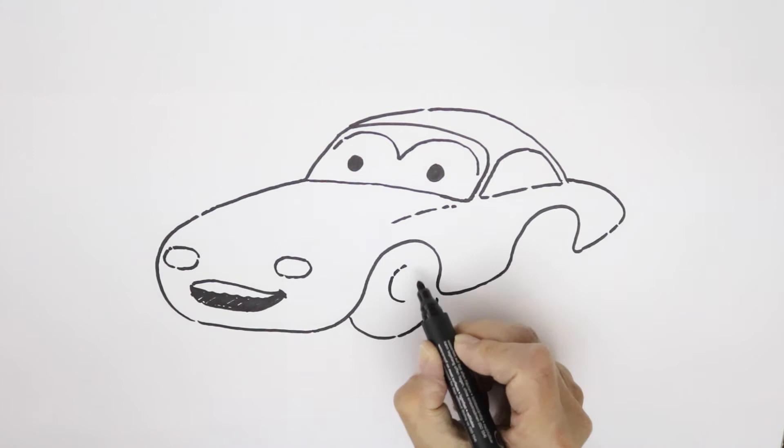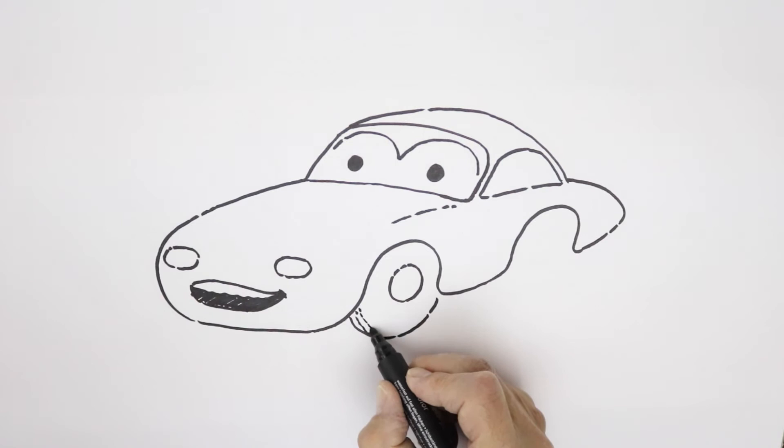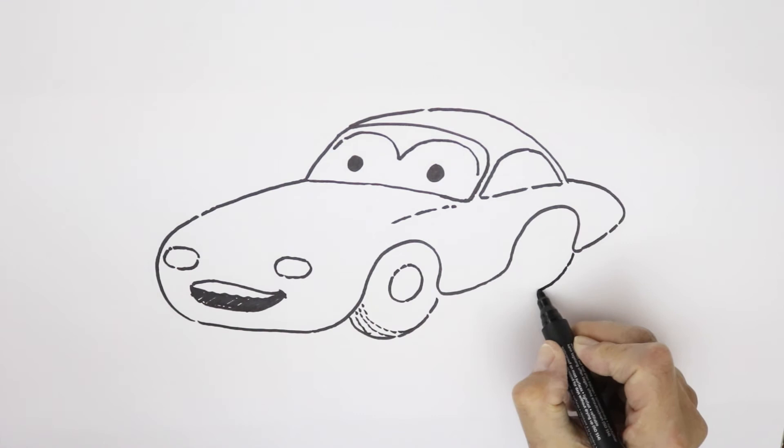Big curves for the tyre shape, put in the hubcap on there, and then put in the kind of shape of the tread coming around, something like that for a bit of detail.